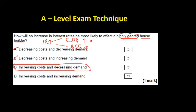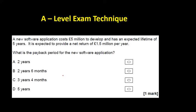This question: a new software application costs £5 million and has an expected lifetime of five years. It's expected to provide a net return of £1.5 million a year. The key thing I need to calculate is the payback period. It's very important for me—at least, you might be really good at maths and be able to work it out straight away; I certainly am not—and I need to have a system to use for these investment appraisal type questions. So I'm going to get my pen out and I'm going to do the following.